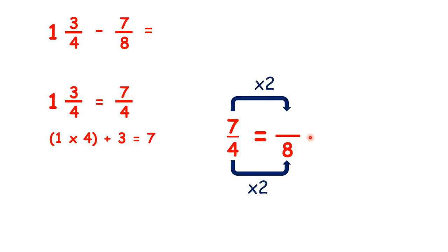7 quarters is the same as 14 eighths. So we've changed 1 and 3 quarters into an improper fraction. And then we've found an equivalent fraction with a denominator that's the same. So now we can rewrite our question.